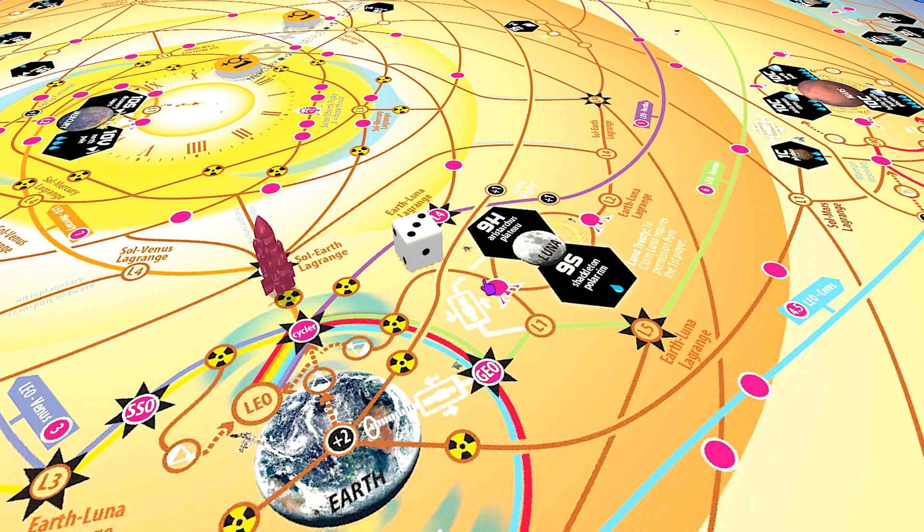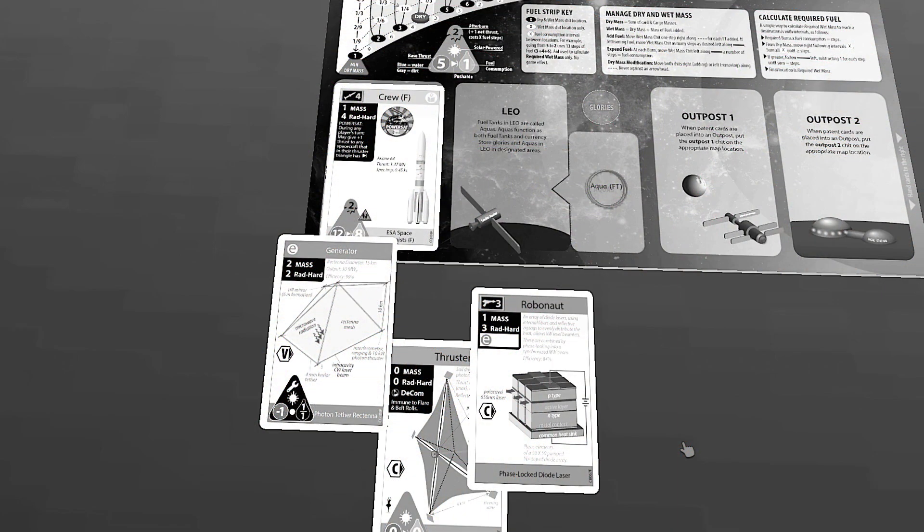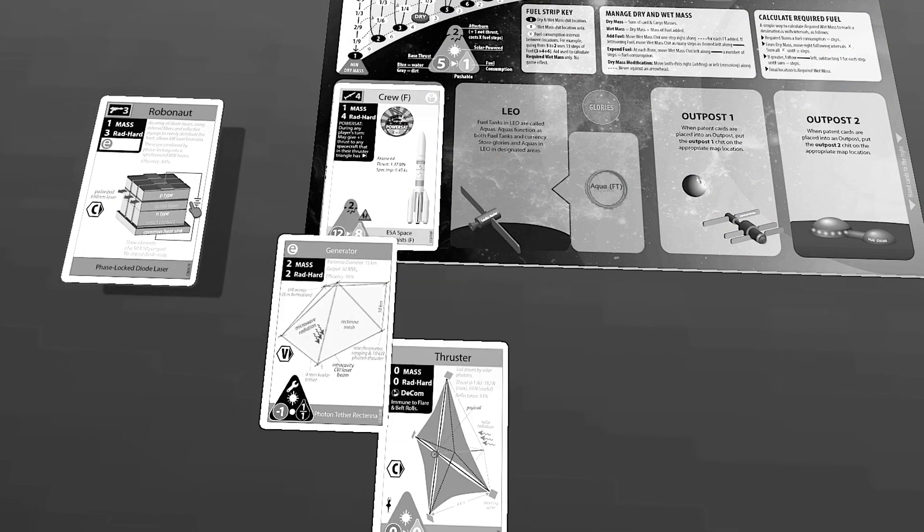Perhaps I could have timed this better, because we are in season red. There's a little more solar radiation out there and I have to apply a plus two to my roll. I roll a six. Uh-oh. I subtract my net thrust of three, add plus two because of season red, and I end up with a result of five. Everything on board is decommissioned—a euphemism that unfortunately includes the crew.